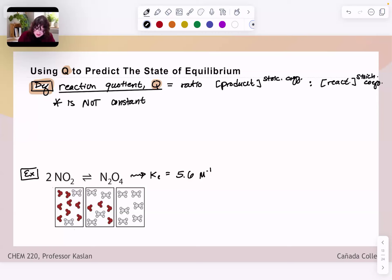And the reason why it's not constant is because this can describe our system and its relative amount or ratio of product to reactants at any time during a chemical reaction.